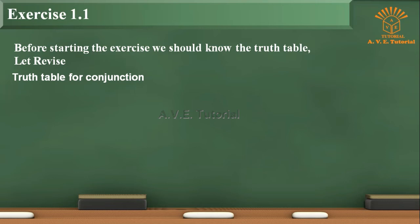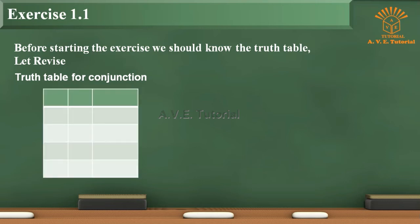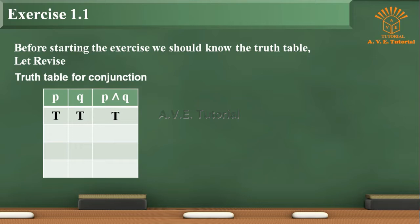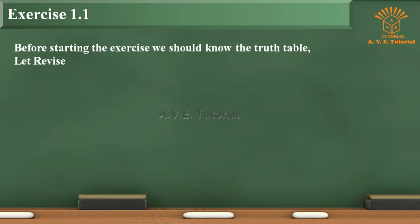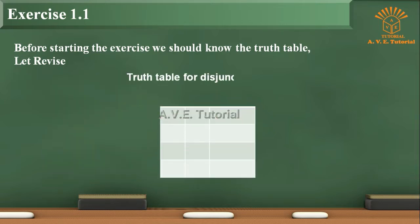Truth Table for Conjunction. First row: P, Q, P and Q. Second row: T, T, T. Third row: T, F, F. Fourth row: F, T, F. Fifth row: F, F, F.